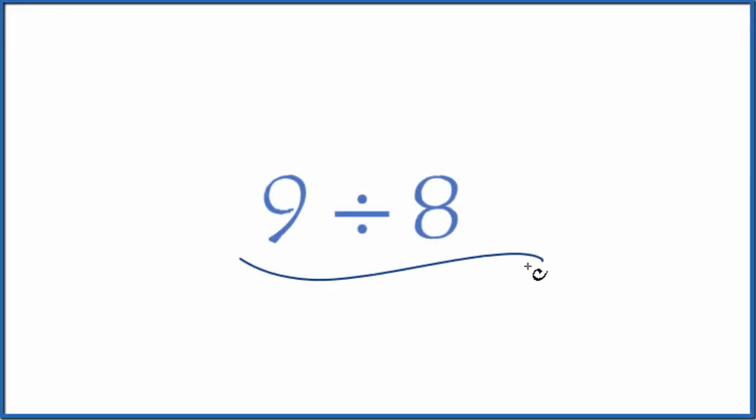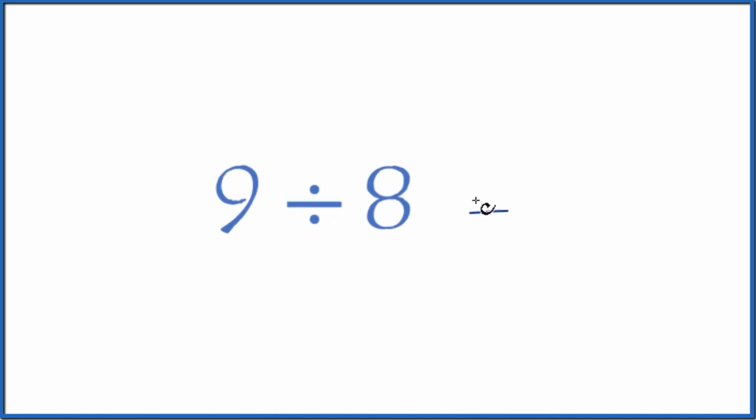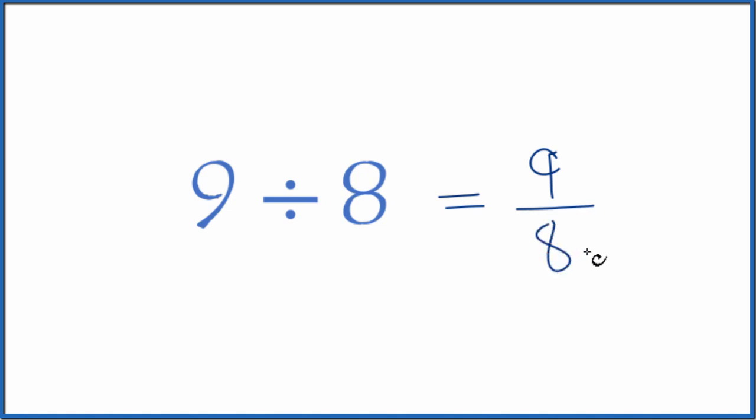Let's divide 9 by 8, and here's how you do it. First, let's consider it as a fraction. 9 divided by 8 is the same as 9 eighths. So we have a fraction.